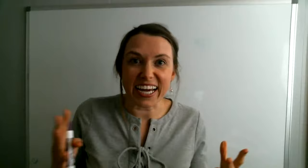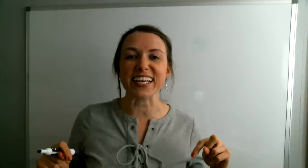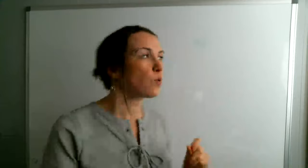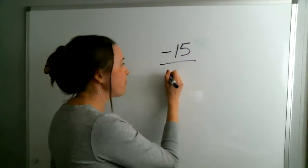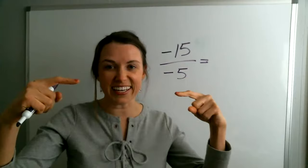Let's do a little bit of practice. Multiplication and division are buddies — they're going to follow the same rules. So we're going to take negative 15 divided by negative 5. If you know the answer, type it in the chat. Those are both negative numbers, and when we have a negative and a negative, we put them together and it's a positive. So it's going to be positive 3.